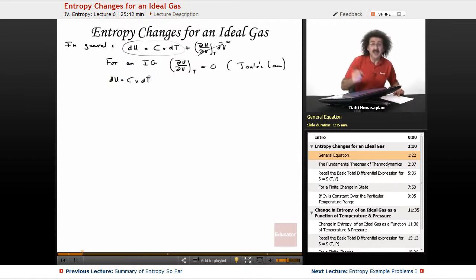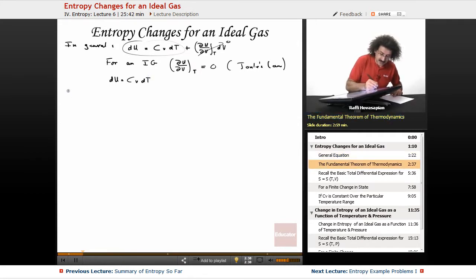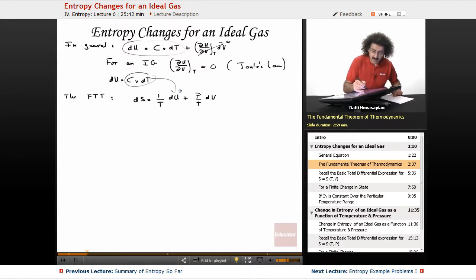So now we'll go ahead and put that aside for a second. Now let's deal with the fundamental theorem of thermodynamics. So the fundamental theorem of thermodynamics, it says the following: ds is equal to 1 over T du plus P over T dv. Well, we have du under conditions of an ideal gas. So we'll just go ahead and put this into here. So what we end up with is ds equals 1 over T, Cv dt plus P over T dv. So I'll go ahead and write this as ds equals Cv over T dt plus P over T dv.